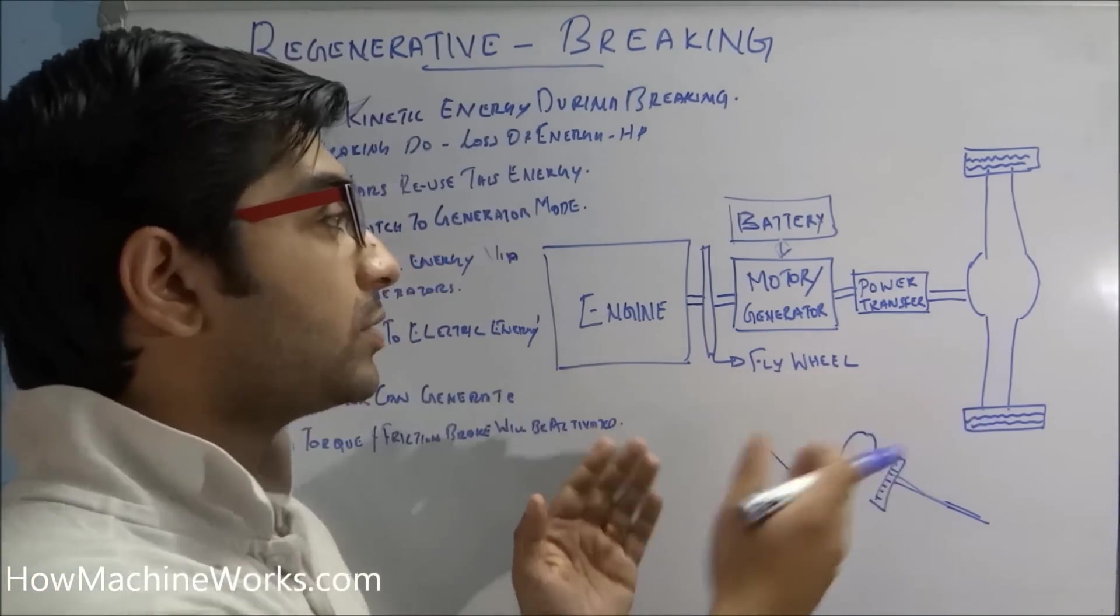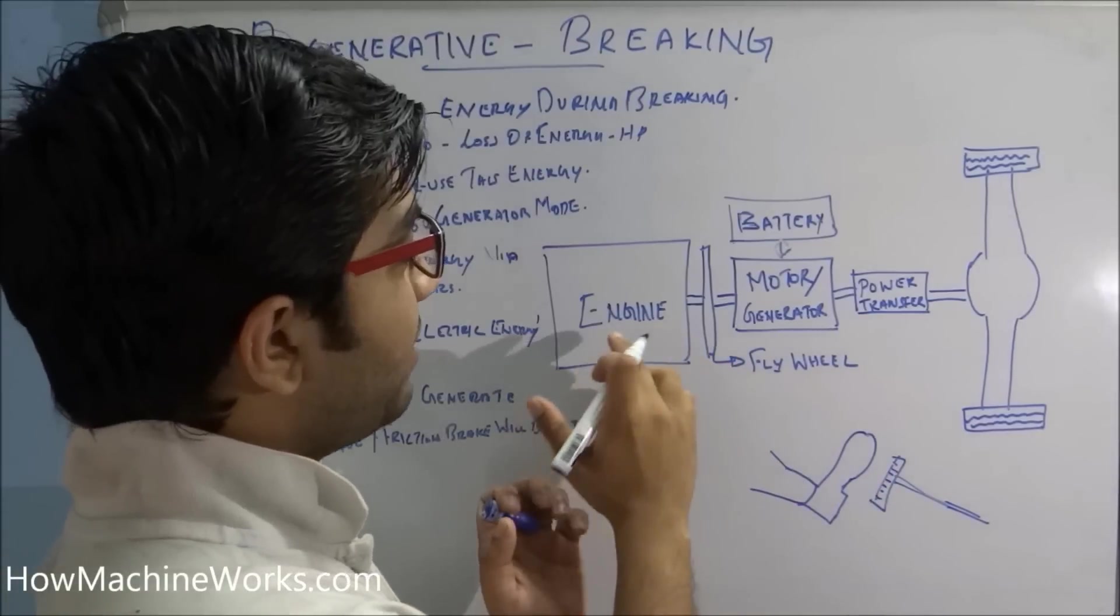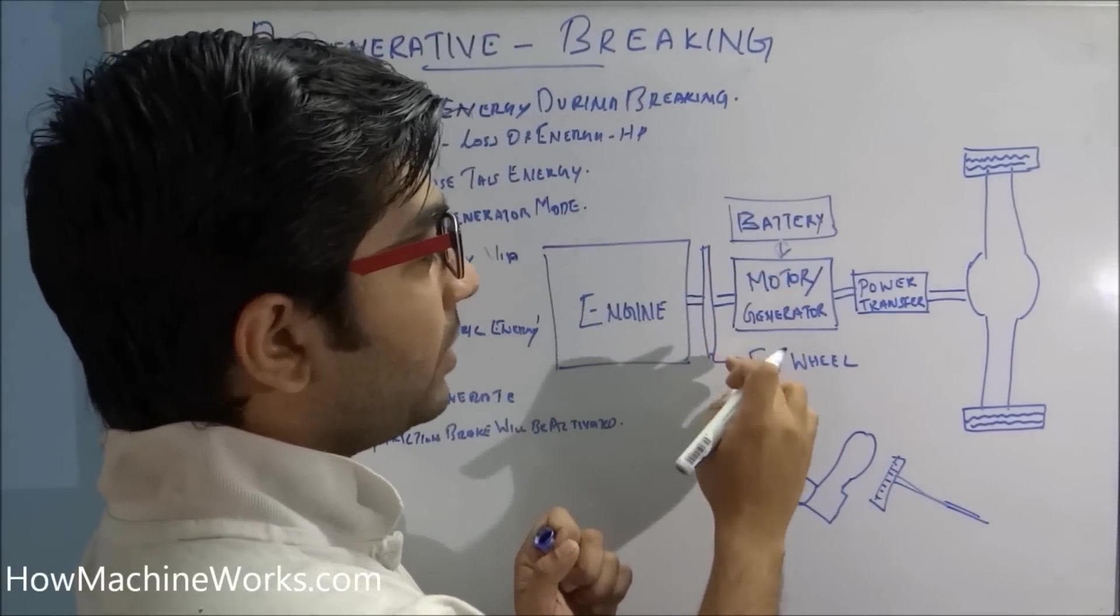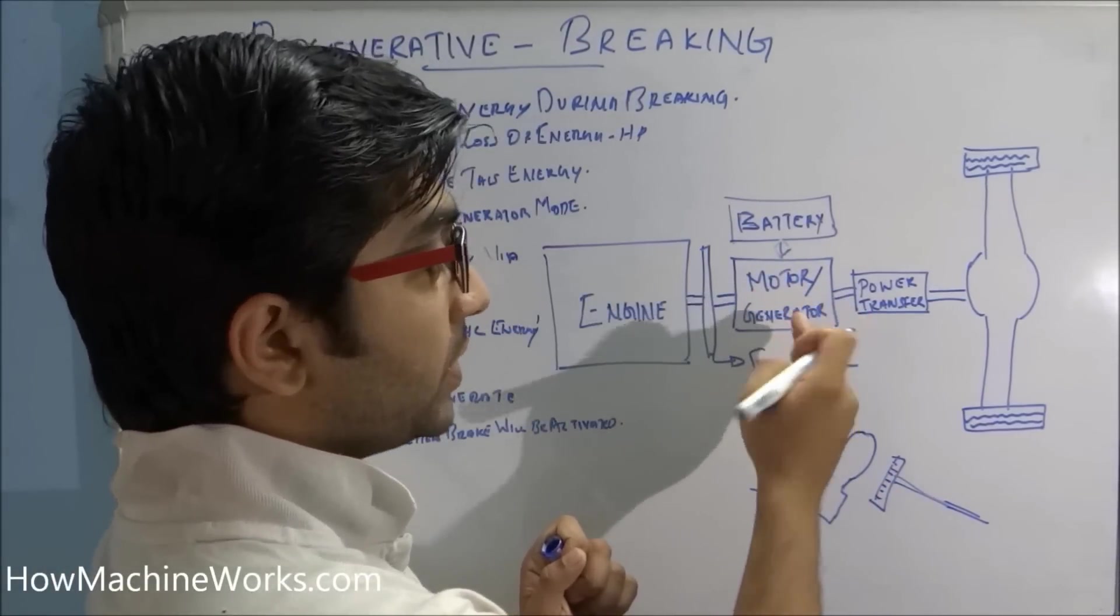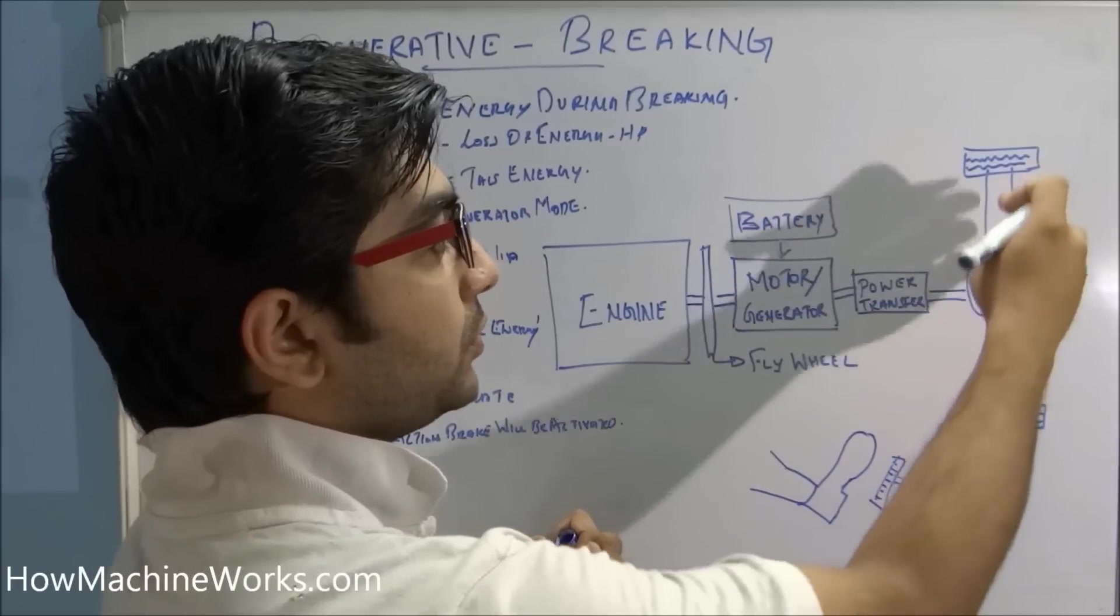This is a block diagram of the powertrain. Here we have the engine, then the flywheel, then comes the electric motor or generator, then the power transfers to the rear axle.